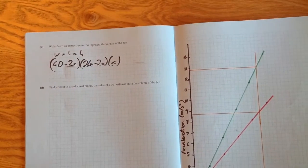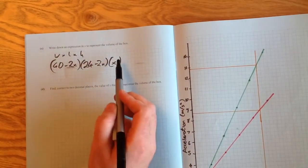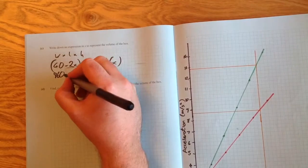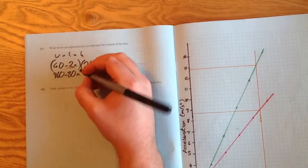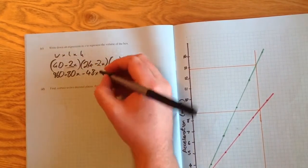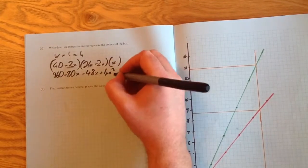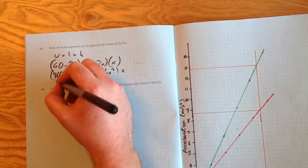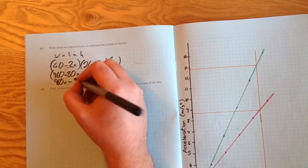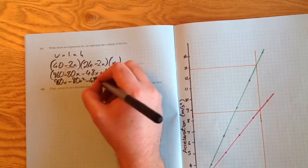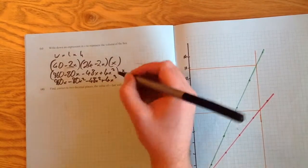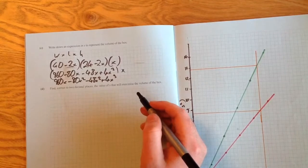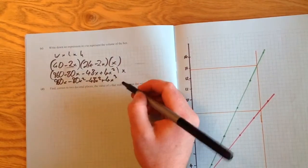To expand this, first multiply out the first two brackets. You end up with 960 minus 80x minus 48x plus 4x squared, all multiplied by x. So multiplying by x gives 960x minus 80x squared minus 48x squared plus 4x cubed. It shouldn't surprise us that x cubed appears in a volume question, because volume is measured in centimeters cubed.